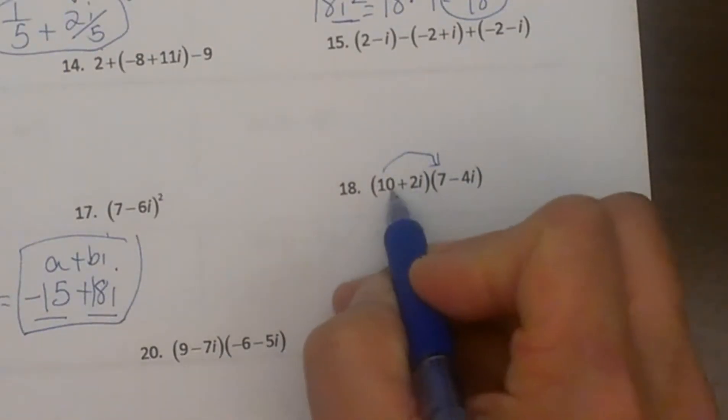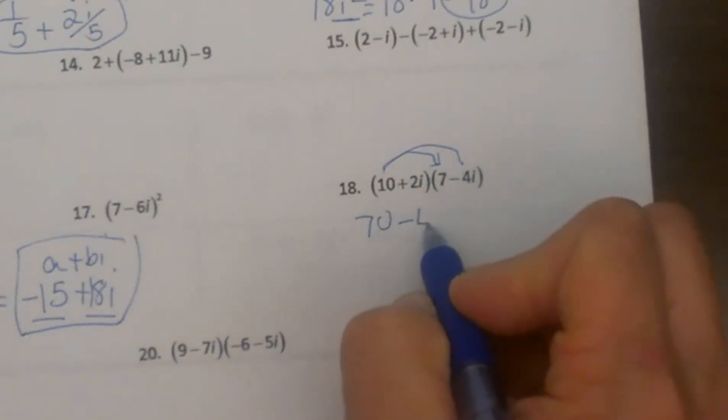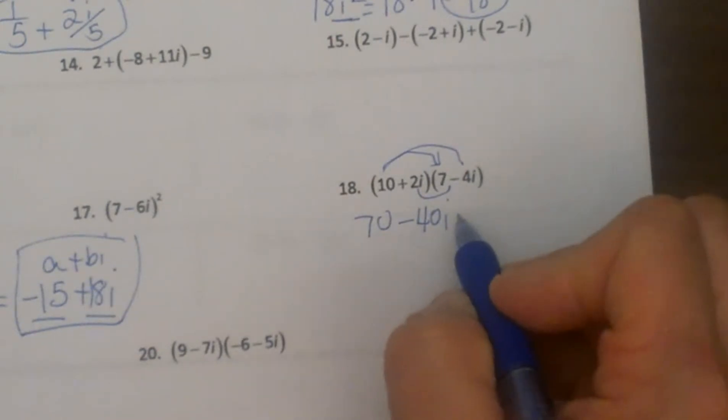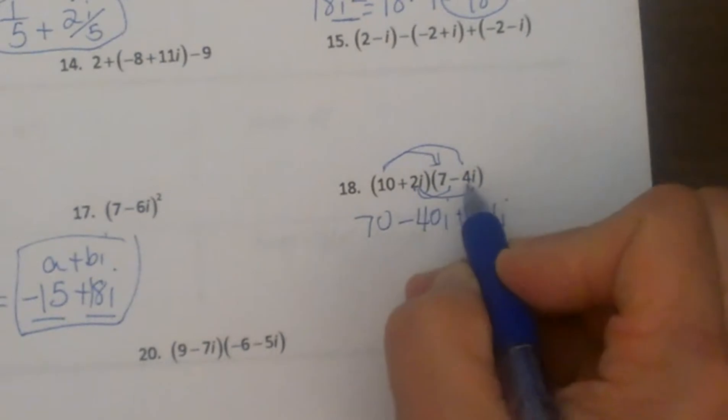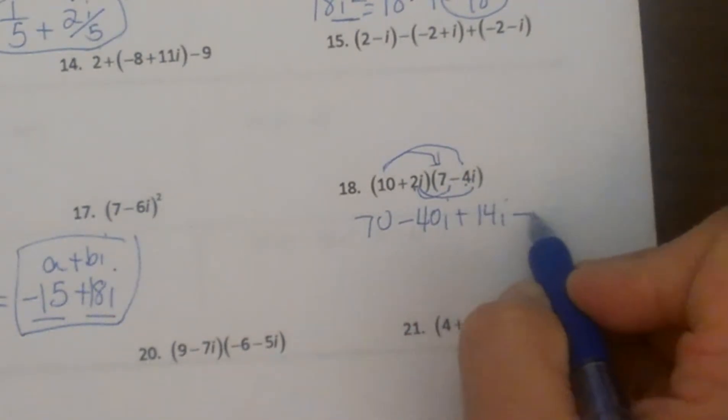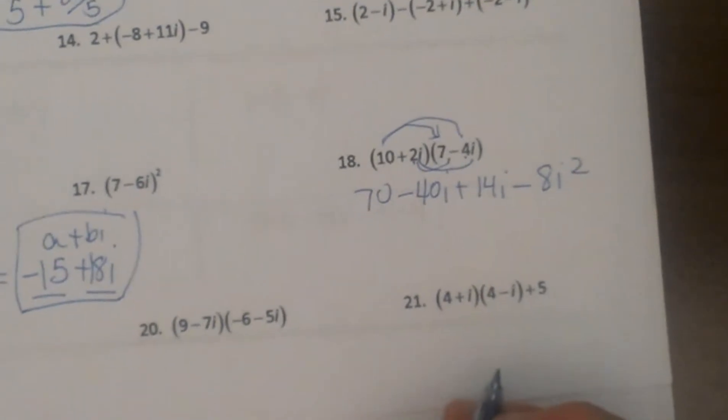We are going to do first: 10 times 7 is 70. Outer: negative 40i. Inner: 2i times 7 is positive 14i. And then last I have positive 2i times negative 4i, that gives me negative 8i squared. Now let's try to simplify that.